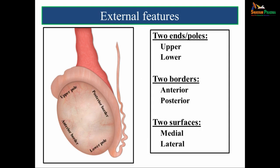The external features of the testis — it is ellipsoid or oval shaped. Just remember the number 2: it has two ends or poles, two borders, and two surfaces. The two poles are the upper pole and lower pole; the two borders are the anterior border and posterior border; the two surfaces are the medial surface and lateral surface.